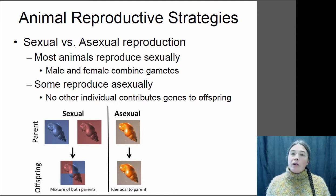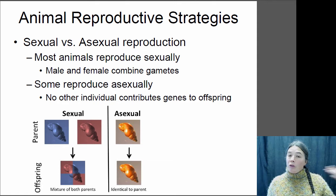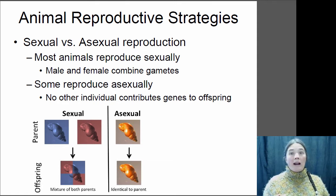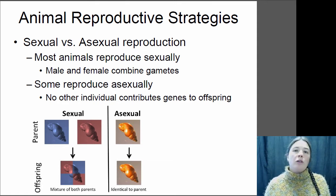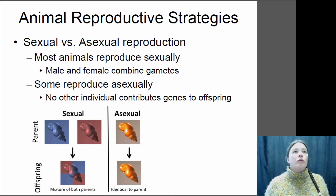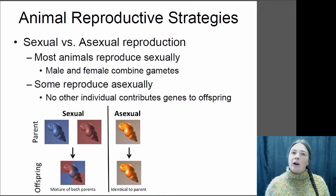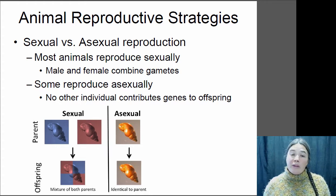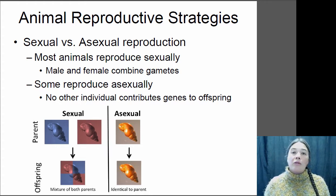But if the environment is very variable and changes over time, then although your particular combination of genes might be good right now, in the future they might not be good. So if you go through sexual reproduction, you combine your genes with another individual and your offspring are very diverse, allowing them to survive in a wider variety of environments. In a variable environment, sexual reproduction is often more successful, and honestly most environments are variable, so we do tend to see a fair amount of sexual reproduction in animals.